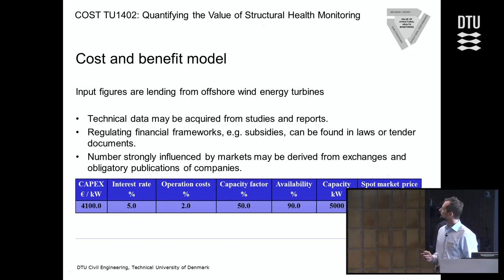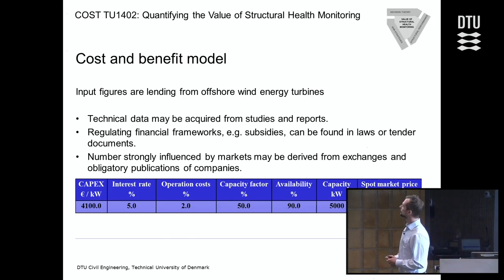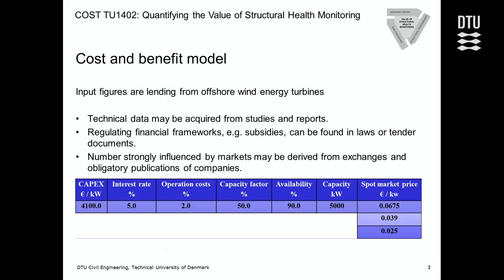Here we have some examples of values that could constitute such a model. Very important first of all are the basic investments, the capital expenditures — the construction cost for such a wind turbine, expressed in euros per kilowatt. Then we have an interest rate, which is an assumption since we do not know the future. Here it is assumed to be 5%, which is a rather common value. And then operational costs, which might also vary, plus a capacity factor of 50% and availability of 90%. Of course, the maximum output is also very important to know how much we can earn from the system.